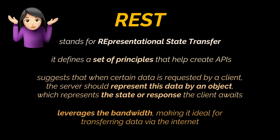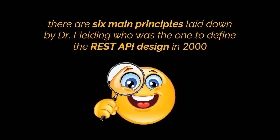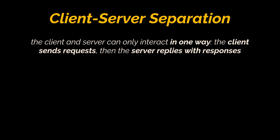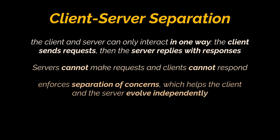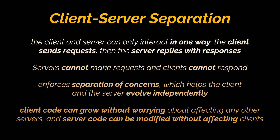REST defines six main principles laid down by Dr. Fielding, who defined the REST API design in the year 2000. First, we have the Client-Server Separation principle. Under REST architecture, the client and server can only interact in one way: the client sends a request to the server, then the server sends a response back. Servers cannot make requests and clients cannot respond — all interactions are initiated by the client. This enforces separation of concerns, helping client and server components evolve independently.